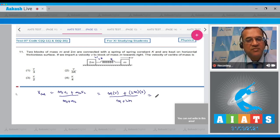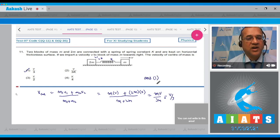So that becomes mv upon 3m and that is equal to v by 3. So velocity of center of mass is v by 3 and the first option is v by 3. So answer to this question is 1.